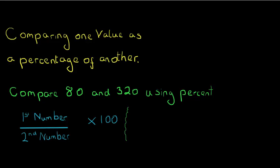So here we have 80 over 320 and then times 100. As I'm not allowed to use a calculator I'm going to be working primarily on that fraction. The first thing I can see to simplify is to cancel the zeros — otherwise known as dividing by 10 — leaving me with 8 over 32. I recognize both numerator and denominator as even numbers, so I can halve it, giving 4 over 16.